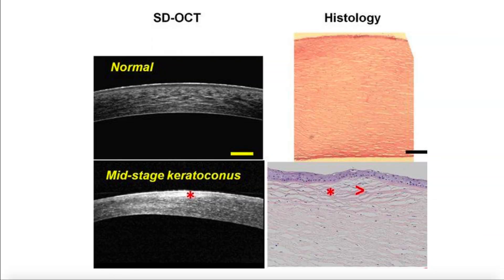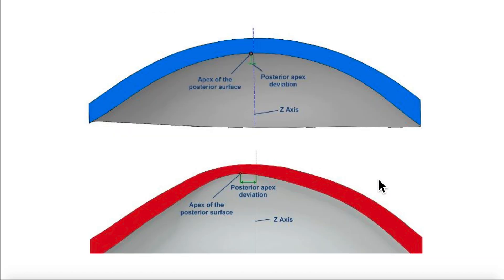In histology, in a normal cornea, the epithelium is homogenous. But in keratoconus, the epithelium is irregular and thinning at the peaks. There is thinning at the peak or apex of the cone. Another image shows the same thing: a thinning at the apex and a thickening around it.